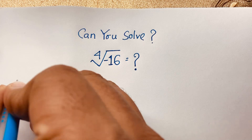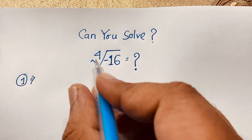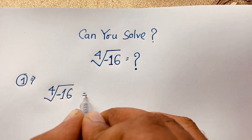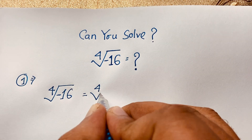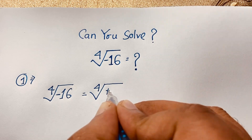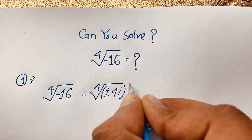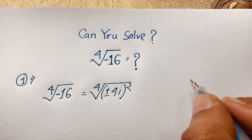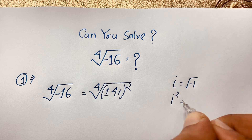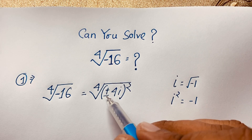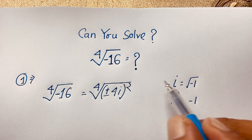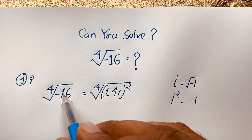Method 1: Here we have the 4th square root of -16. This is a complex number. We can rewrite -16 as (±4i)² because the complex number i equals √(-1), and i² equals -1. So 4² is 16, and i² is -1, giving us -1 times 16 equals -16.